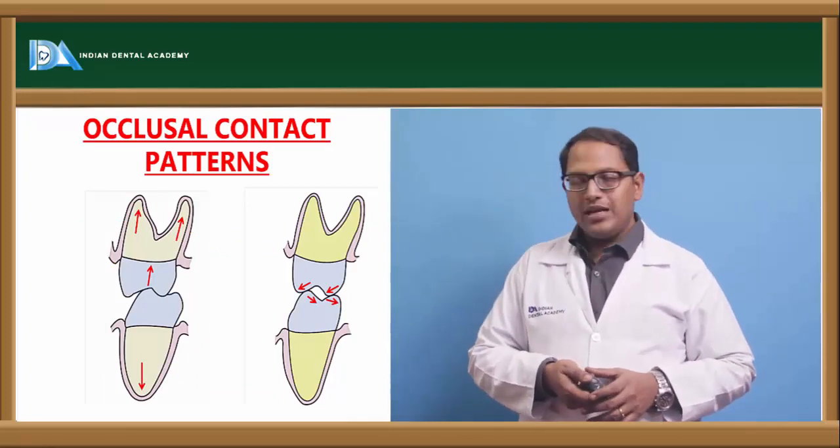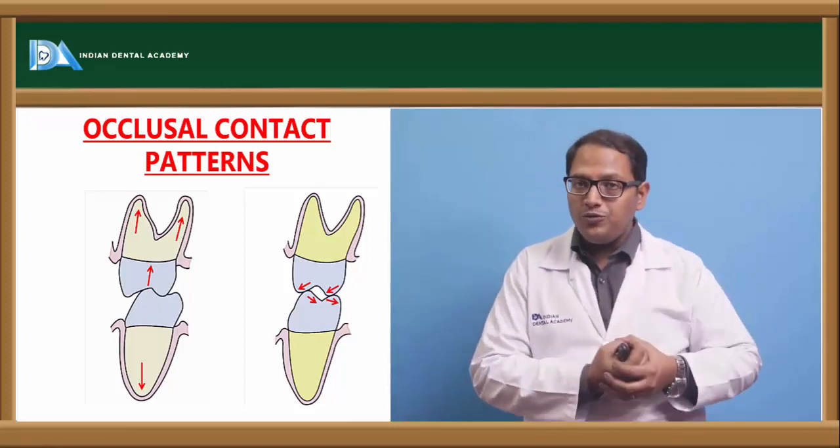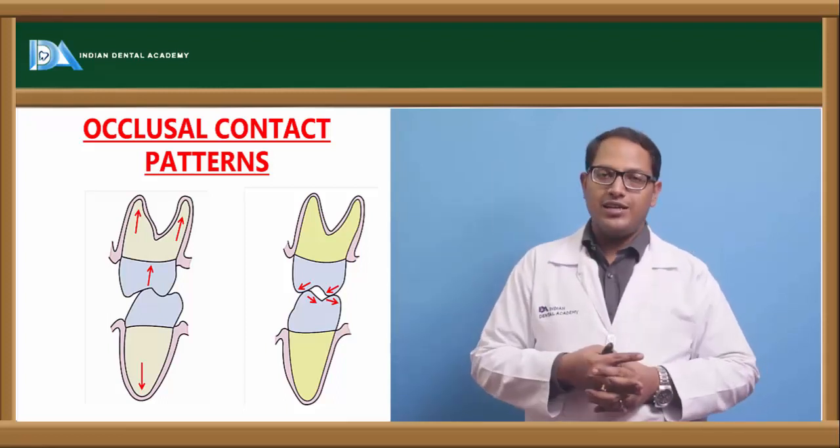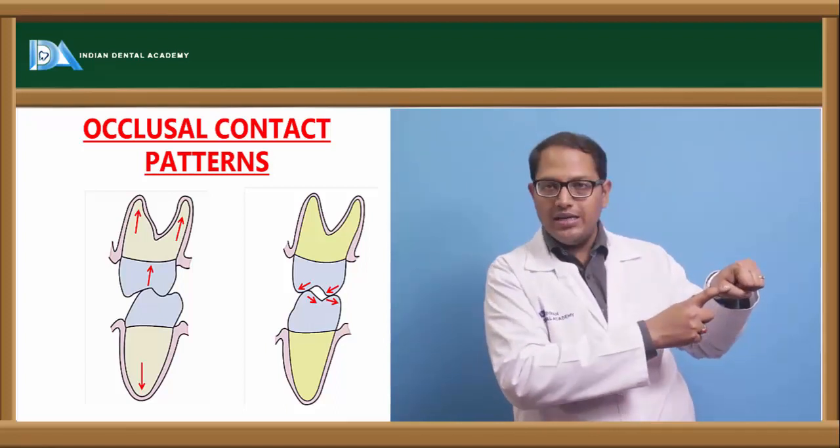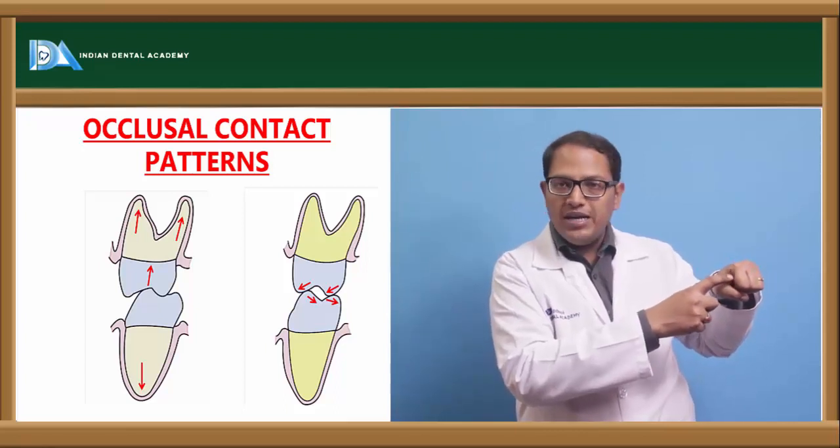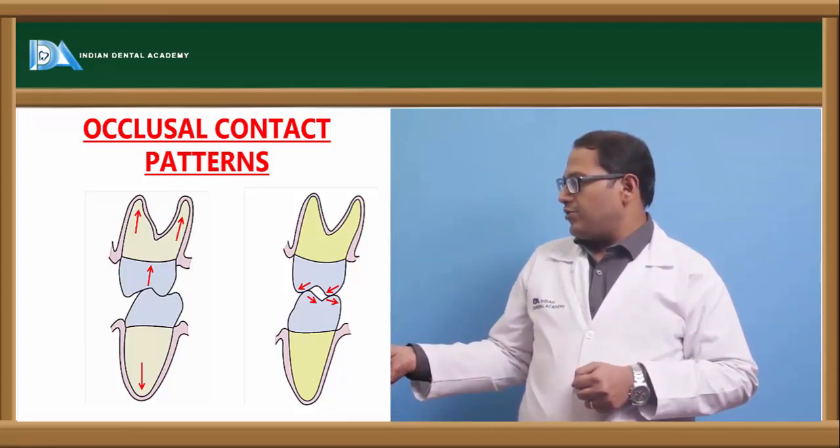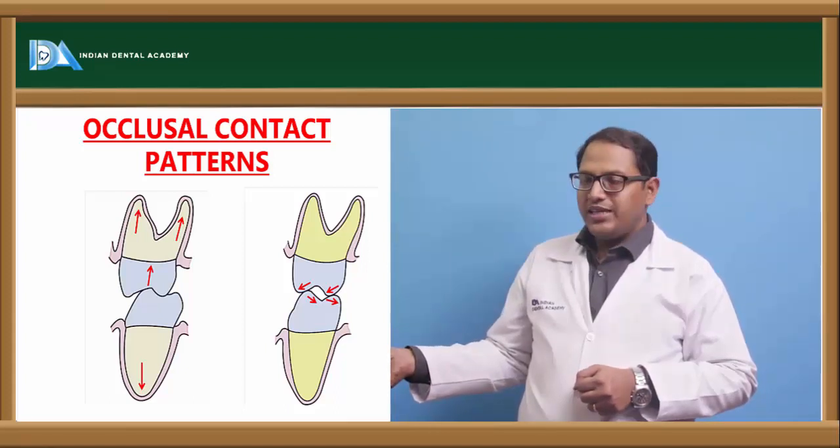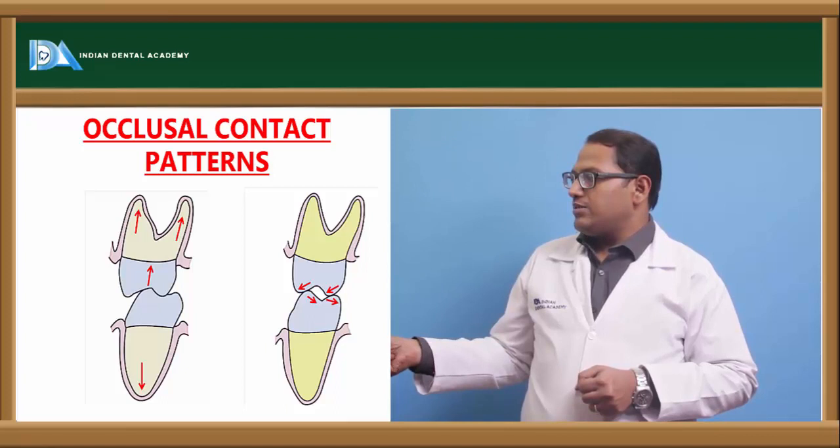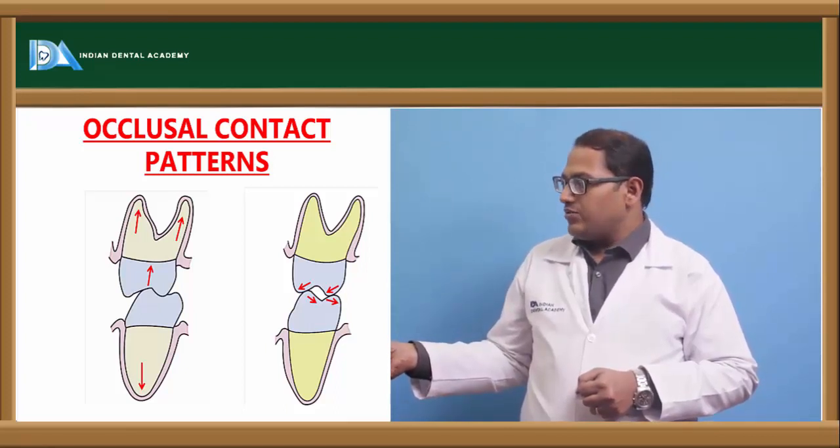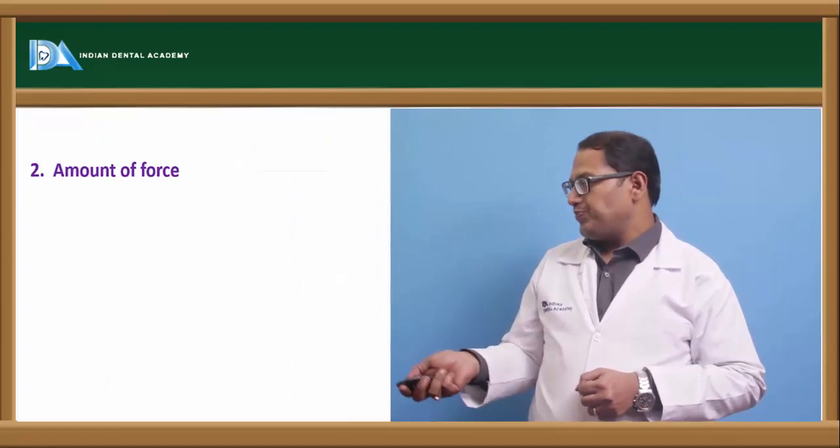Occlusal contact patterns, how can it be? It can be cusp to fossa relation, cusp to cusp relation, or fossa to fossa relation. The most efficient is cusp to fossa relation having a tripod effect on the cusp. If this is my cusp, if we mark the cusp as a triangle, the triangle will have a highest dependent point. That highest dependent point should touch the fossa. This point should touch the fossa. Here itself, it is giving a mortar and pestle activity. But this cusp height will also determine the eccentric movement. If this is high, this tooth has to follow this curvature to come to this side. So this has to be in alignment.